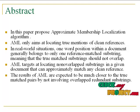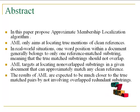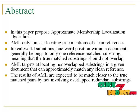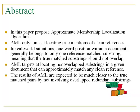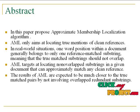In this paper we propose a new type of membership checking problem — Approximate Membership Localization — which aims at locating the true matched clean reference. In real world situations, one word position within a document generally belongs to only one reference matched substring, meaning the true matched substring should not overlap. Therefore AML targets locating non-overlapped substrings in a given document that can approximately match any claimed reference. Where overlapped substrings are present, only the highest similarity qualifies as the result.